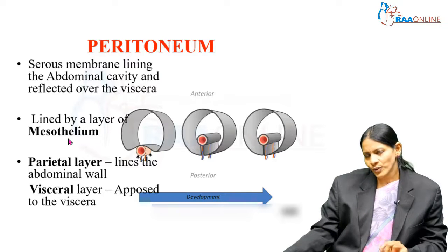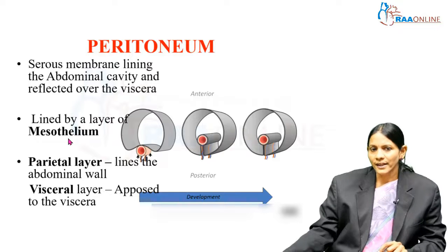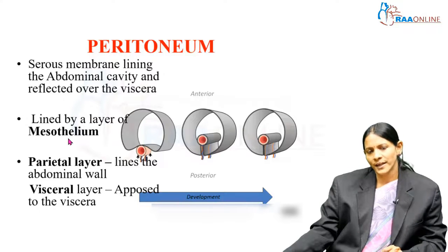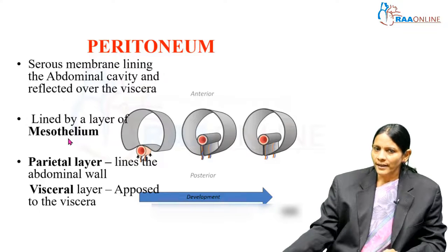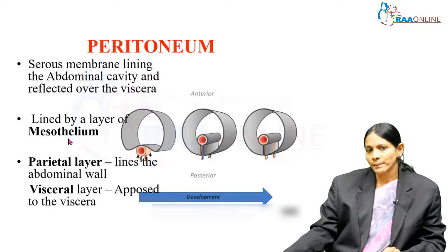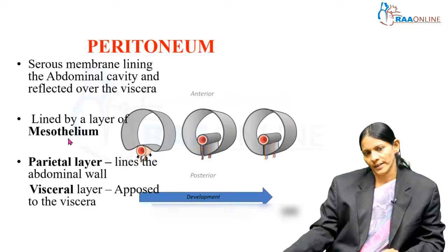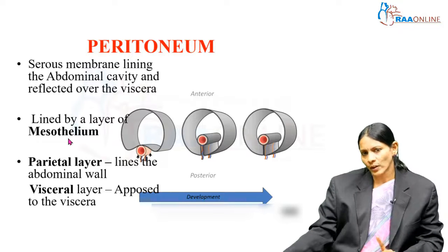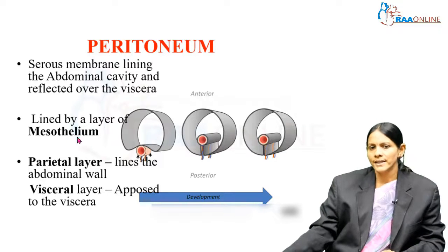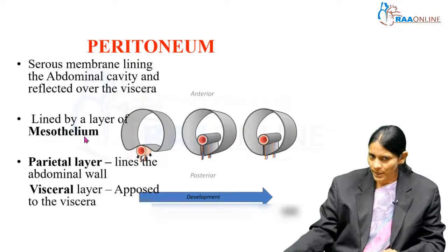I would like you to note where else we have come across a different term used for the same lining squamous epithelium. The squamous epithelial cells that line the inner surface of blood vessels are called endothelium, because endo means inner. So it's the same squamous epithelium — when it lines blood vessels it's called endothelium, and when it lines the peritoneum it is called mesothelium.